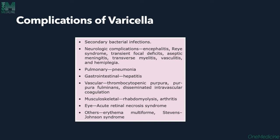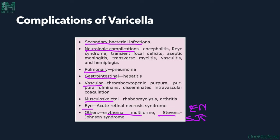Complications of Varicella include secondary bacterial infections; neurologic complications like encephalitis, Reye's syndrome, focal deficits, transverse myelitis; pulmonary complications like pneumonia; GI like hepatitis; vascular like thrombocytopenic purpura, purpura fulminans, disseminated intravascular coagulation; musculoskeletal like rhabdomyolysis and arthritis; eye complications like acute retinal necrosis syndrome; and others like erythema multiforme and Stevens-Johnson syndrome.